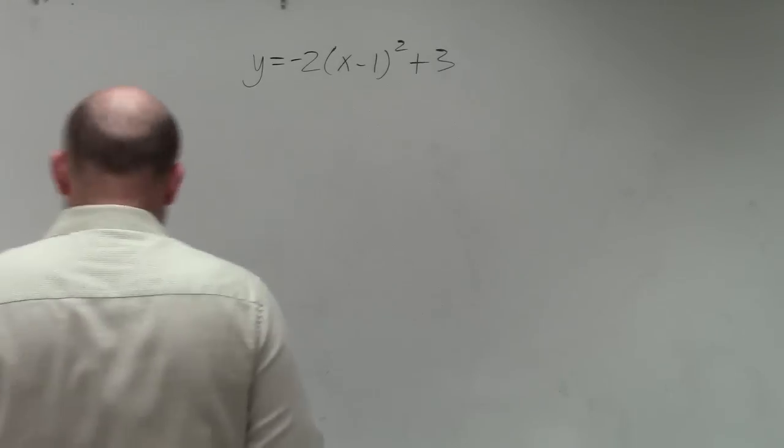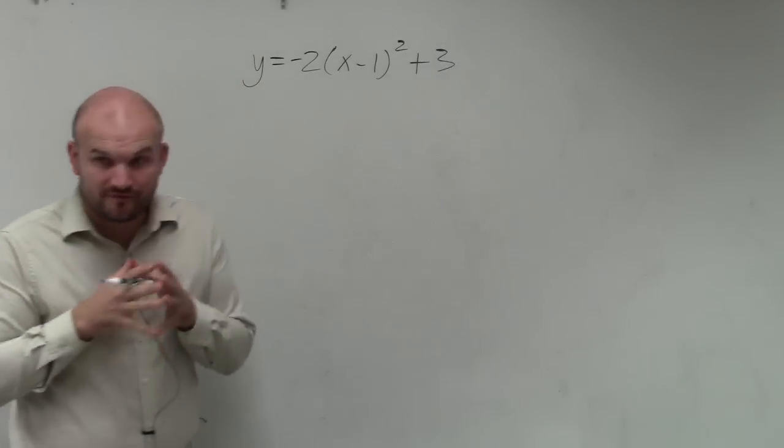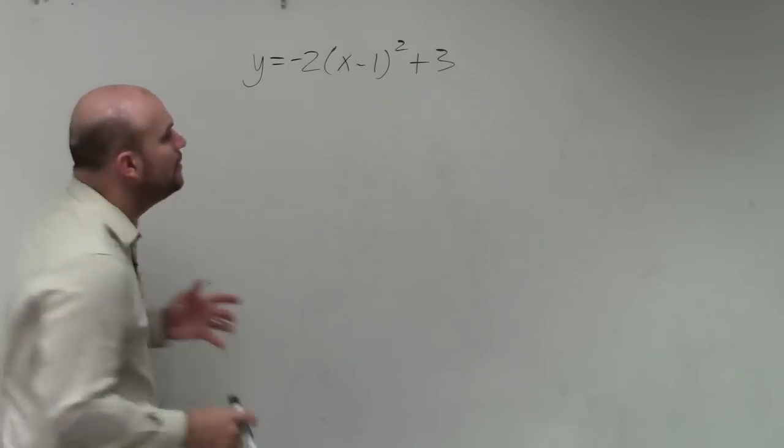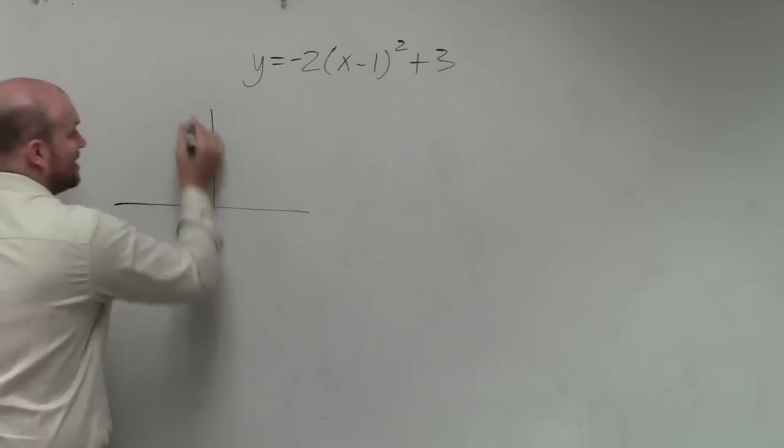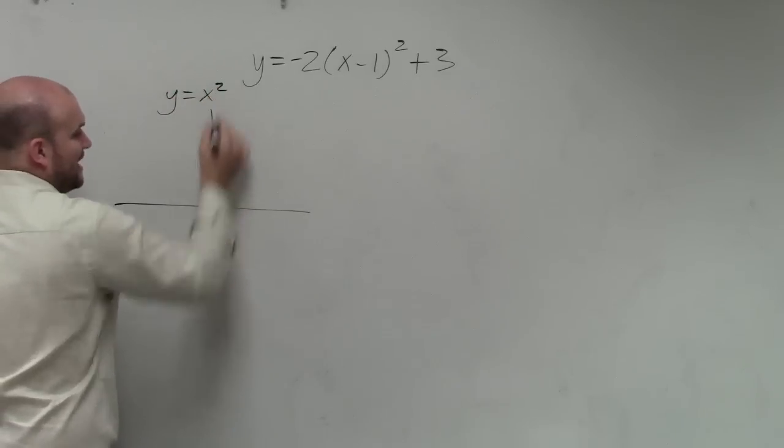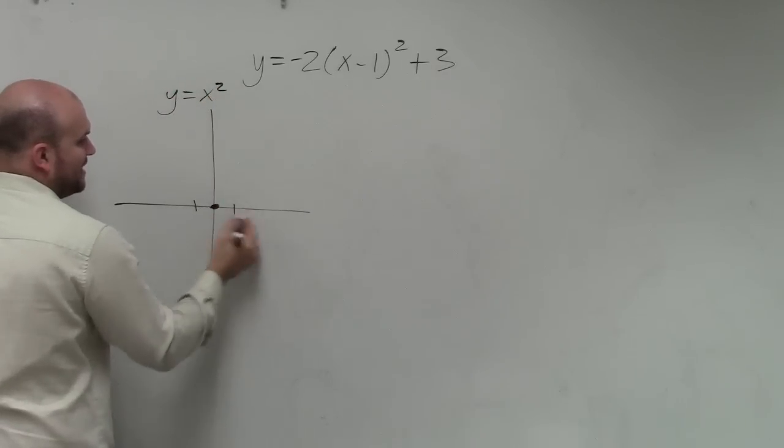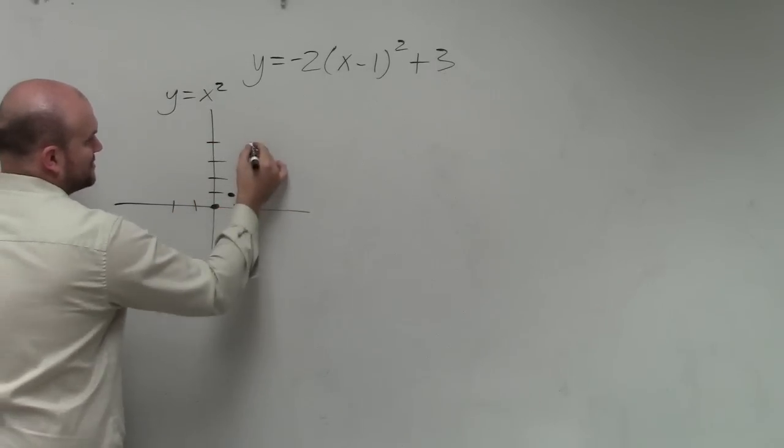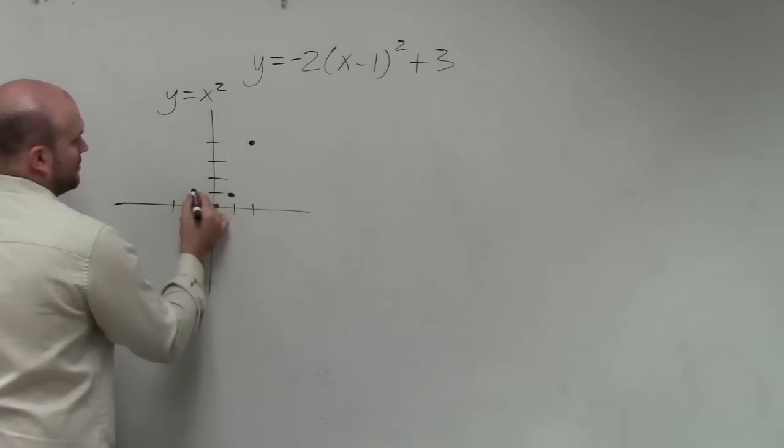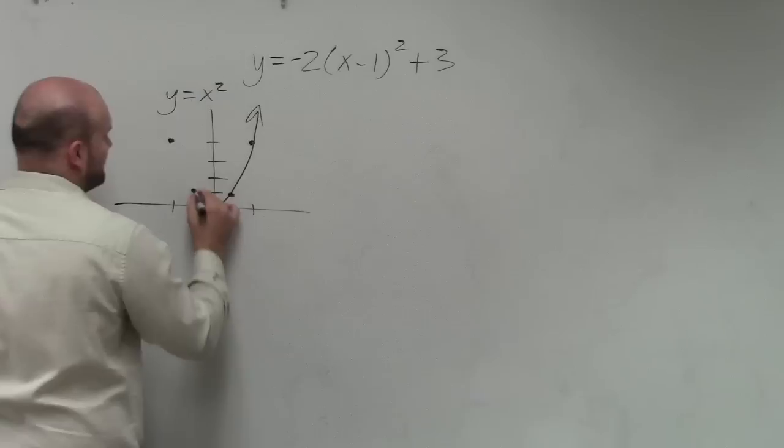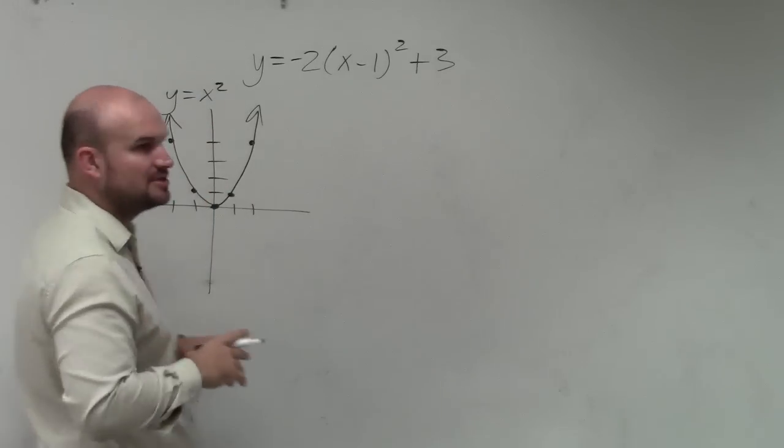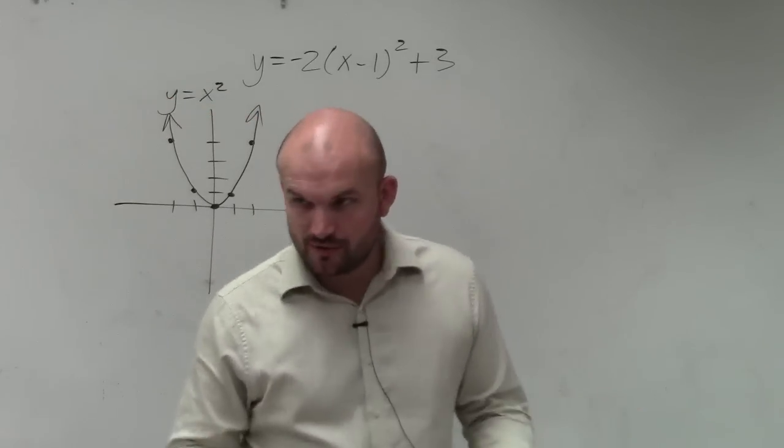So in this example, they're asking you to graph the function. What we discussed in this class, or what I told you guys to write down for your notes, was what the parent graph looks like, y equals x squared. And I gave you guys the points and the table for what that graph looks like. You can see that it's different than the v-shaped graph for absolute value that we talked about. This is called a parabola, and it's the u-shaped graph.